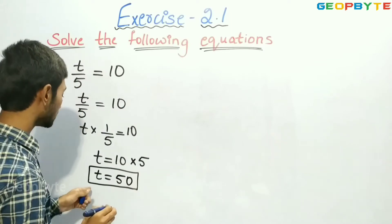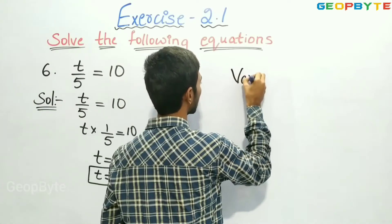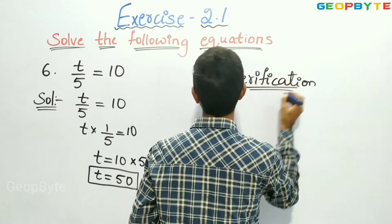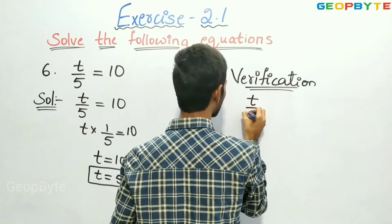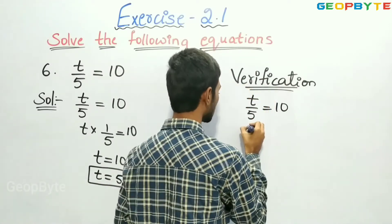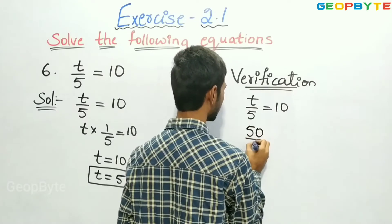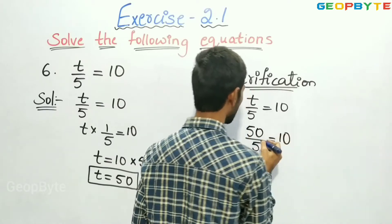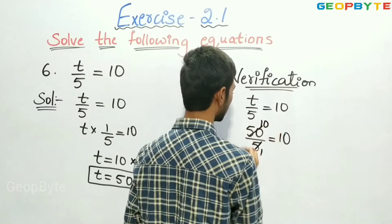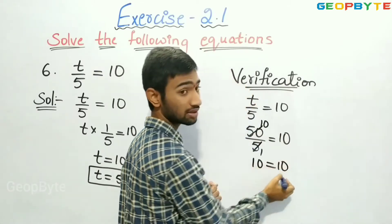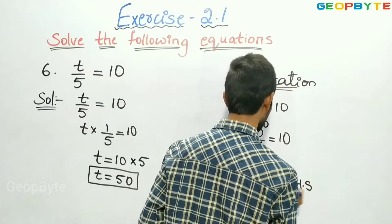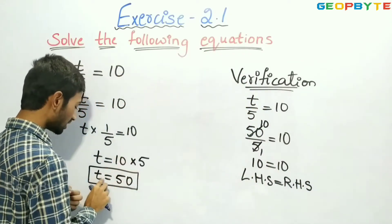Now let us verify the answer. Verification: the given equation is t by 5 equal to 10. We got the value of t equal to 50. So, in the place of t, we will write 50 by 5 equal to 10. Since 5 and 50 are multiples of 5, and 5 tens are 50, we get 10 equal to 10. LHS is equal to RHS. Therefore, we got the correct answer. That is, t is equal to 50.